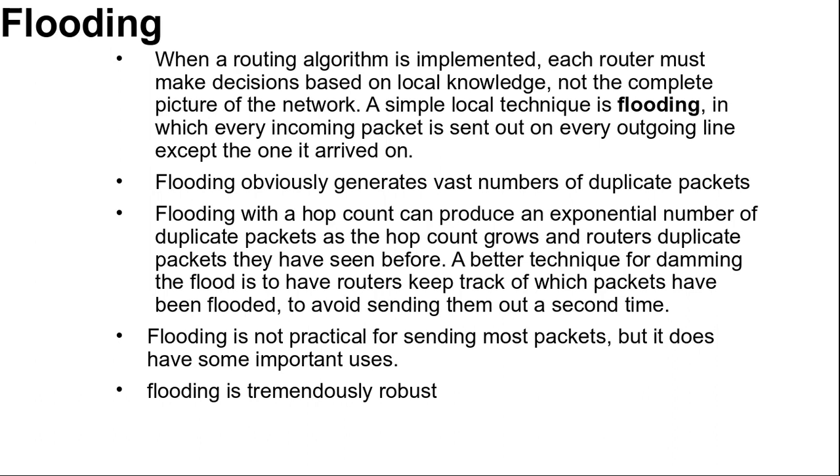One measure to damp the process is to have a hop counter contained in the header of each packet that is decremented at each hop, with the packet being discarded when the counter reaches zero. Ideally, the hop counter should be initialized to the length of the path from source to destination. If the sender does not know how long the path is, it can initialize the counter to the worst case, namely the full diameter of the network. A better technique for damming the flood is to have routers keep track of which packets have been flooded and to avoid sending them out a second time.